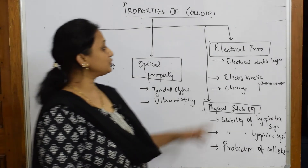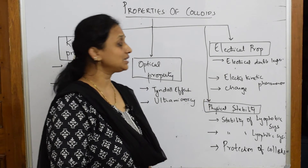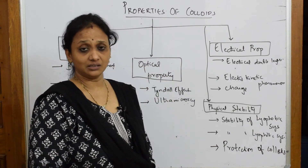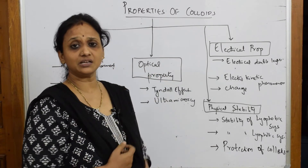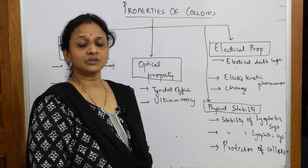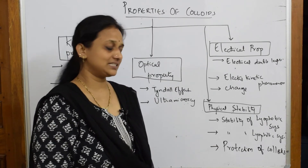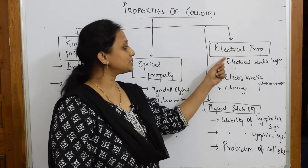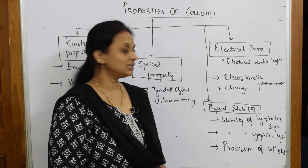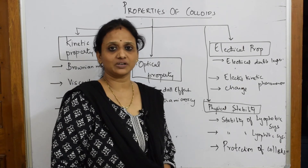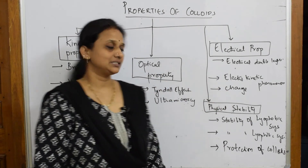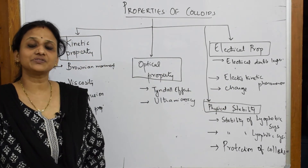After that we move into electrical properties. I'll teach you about zeta potential — the potential difference that arises with a double layer formed by charges. There's also one important question asked from that. Under electrical property we'll cover electrical double layer, electrokinetic potential or phenomena, and charge of colloids — these two topics are given under 'charge' in the NCRT textbook.